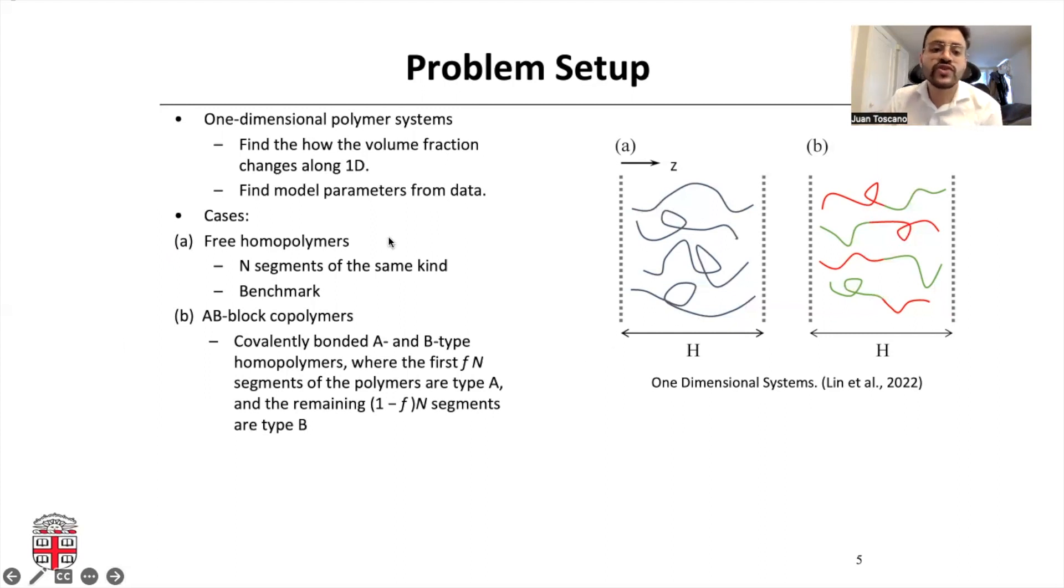The first one is these three homopolymers, and they will have n segments of the same kind. And for the second case, it will be these AB block copolymers, and you will see that we have Fn segments of polymer A and 1 minus Fn segments of polymer B.